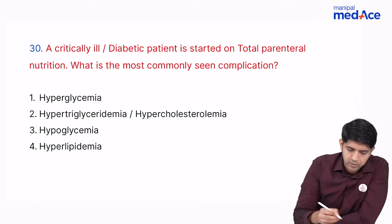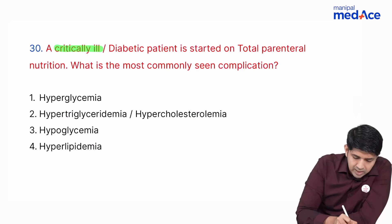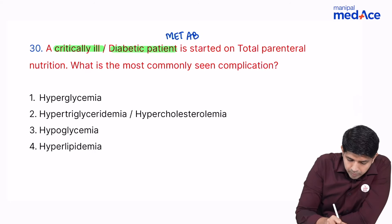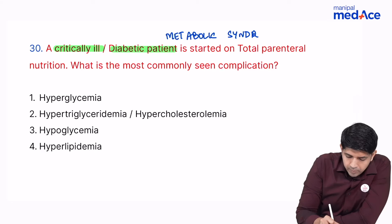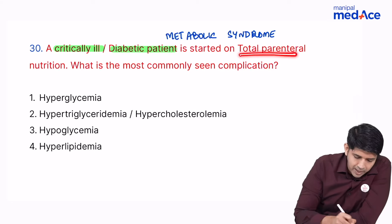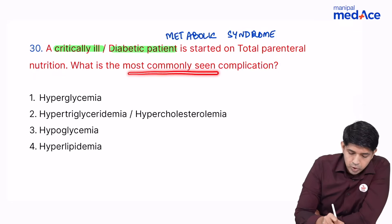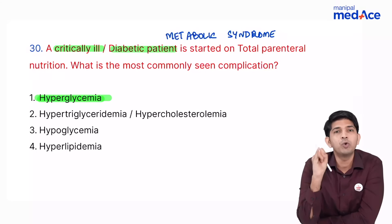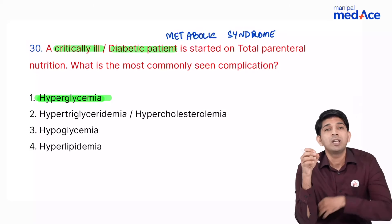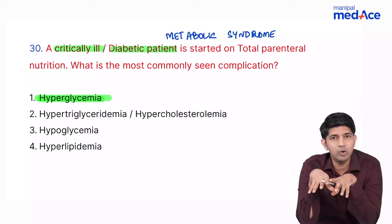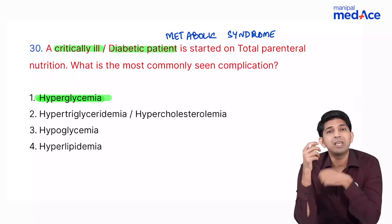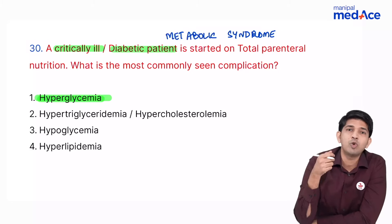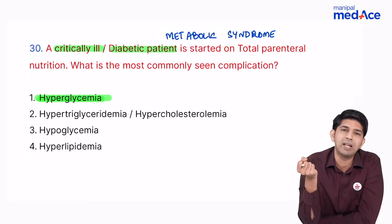A critically ill diabetic patient with metabolic syndrome was started on total parenteral nutrition (TPN). The question asked for the most common complication. The answer is hyperglycemia — along with fluid overload, it is among the first things noticed with TPN. In practice, insulin infusion is often co-administered with TPN because blood glucose can rise to 300–400. Monitoring and managing hyperglycemia is essential during TPN.